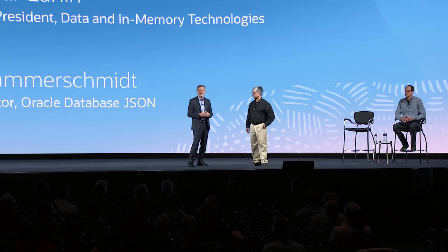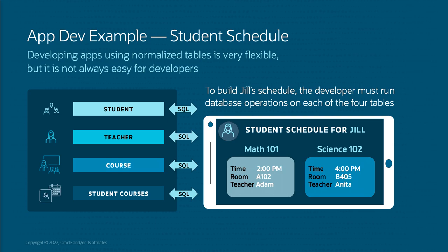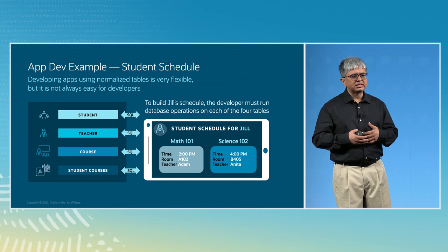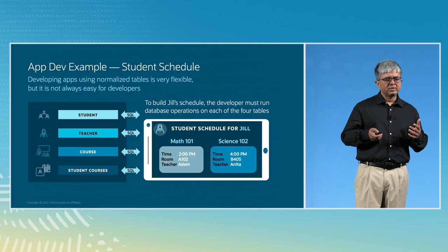We're going to start with a simple example of how you build a relational application. Let's imagine we're building an application that represents a student course schedule — a student has courses with names, a course time, a classroom, and a teacher. A simple example like this would use data stored in multiple normalized relational tables: a student table, a teacher table, a course table, and a table mapping students to their courses. This is a very flexible approach using normalized tables, but it is not always the easiest for developers. Even in this simple example, to build the schedule for Jill, one has to look at all four tables to assemble it. What the developer would really want is to build Jill's schedule using a single database operation.